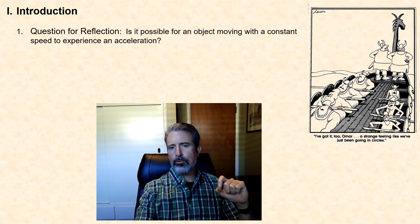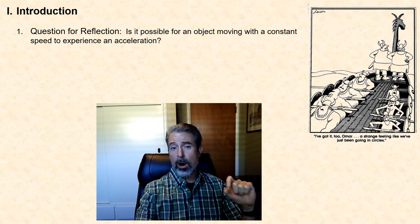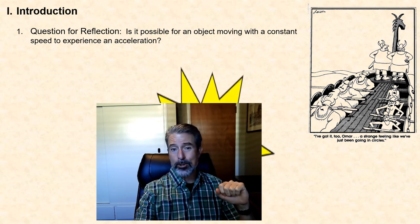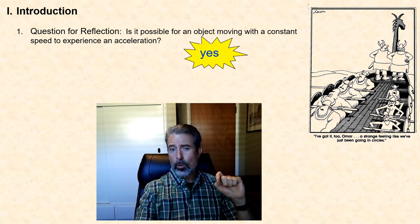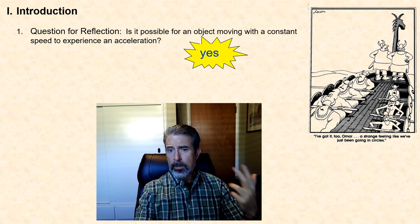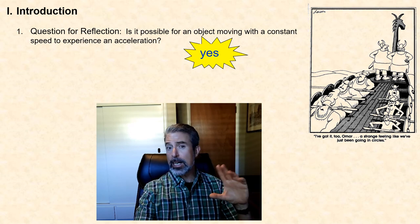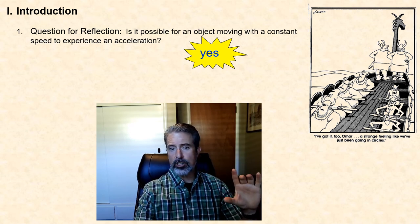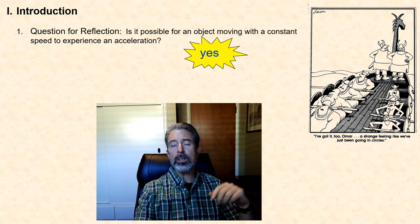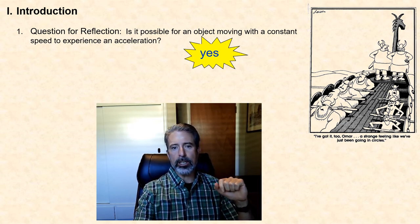Is it possible for an object moving with a constant speed to experience an acceleration? The answer is a definitive yes. We know that acceleration occurs any time the velocity changes. So even if the magnitude of the velocity — that is, the speed — does not change, so long as the direction of motion changes, the velocity changes and acceleration results.